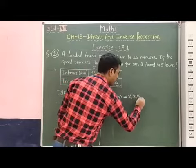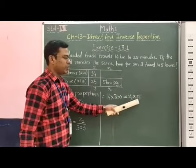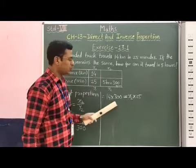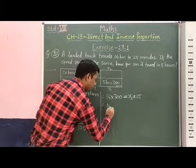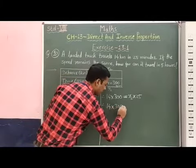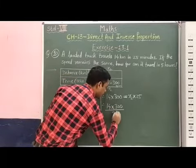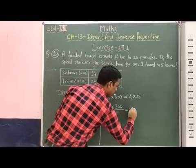x2 into 25. Now, when we shift this 25 from RHS to LHS, it will divide on LHS. Therefore, 14 into 300 divided by 25, which is equal to x2.